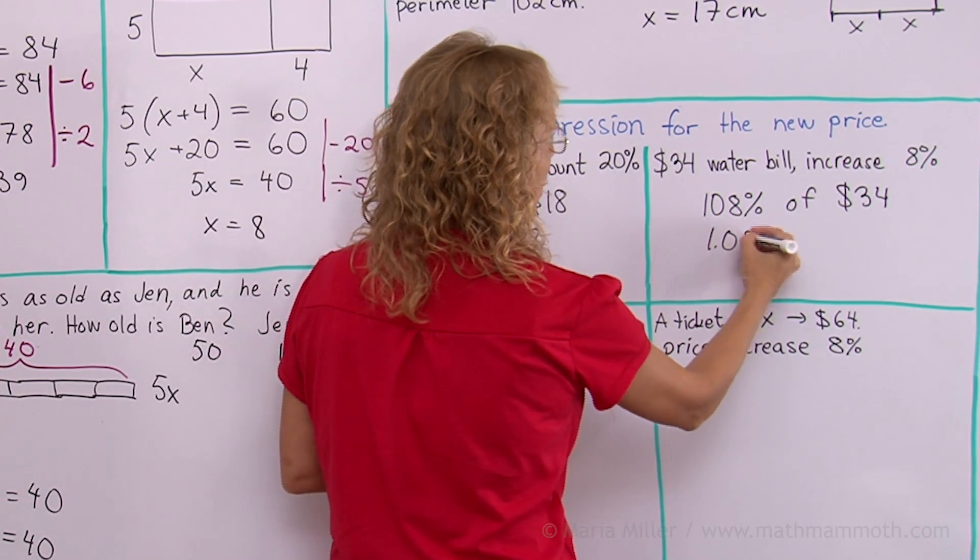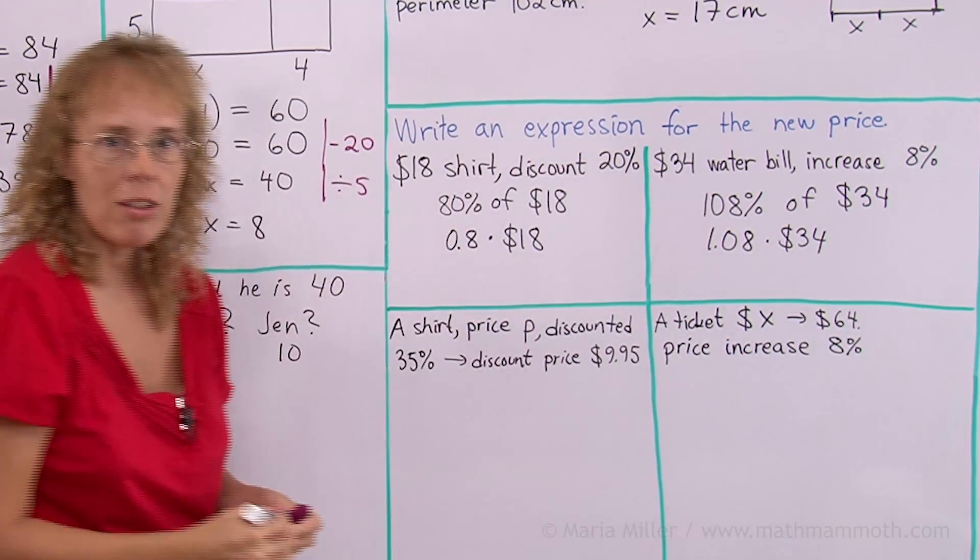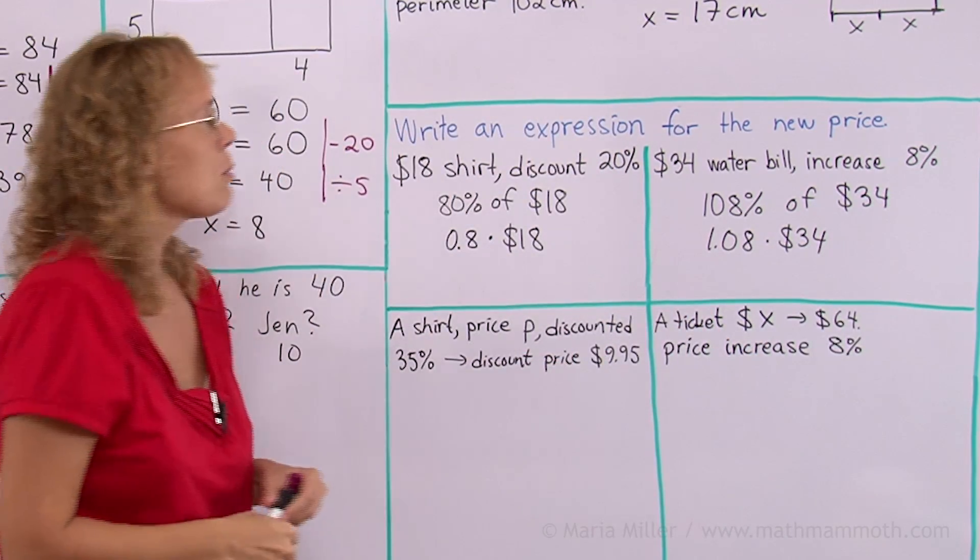As a decimal, this is now 1.08, then times 34. If you put that into your calculator, you will get the new increased water bill.